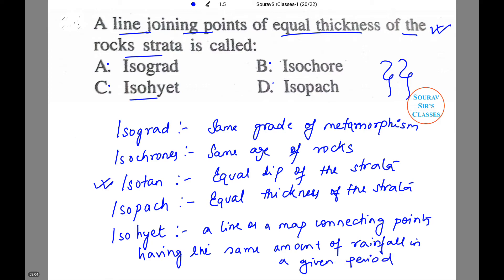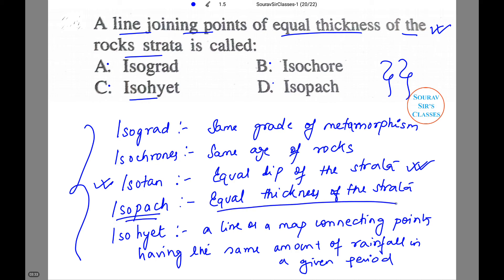I mentioned isoyet because it is related to these terms and worth knowing — extra knowledge is never bad. Looking at all the definitions, you can clearly say that the answer to this question will be isopatch, which determines equal thickness of the rock strata. So D will be the correct option for this MCQ.